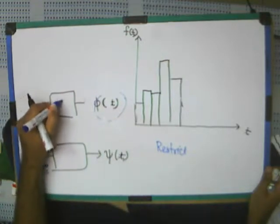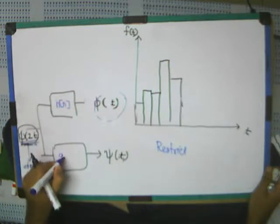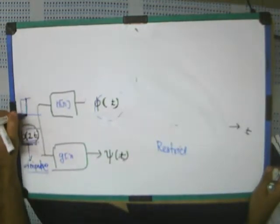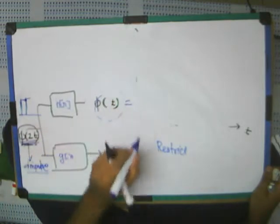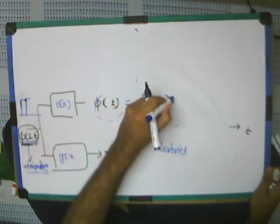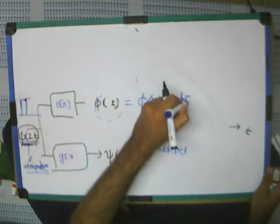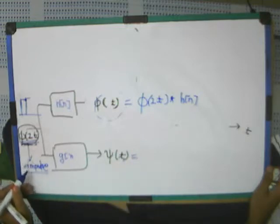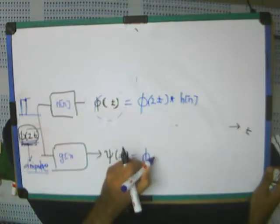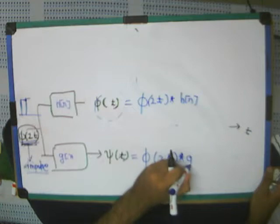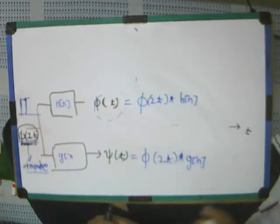If this is the low pass filter, H of N, this is the high pass filter, G of N, then what we can say is that this signal, phi of T, is equal to phi of 2 T convolved with H of N. And this, phi of T, is equal to phi of 2 T convolved with H of N. Are you getting this point?